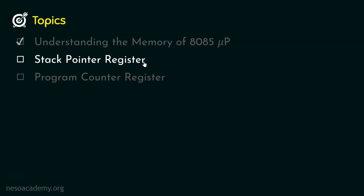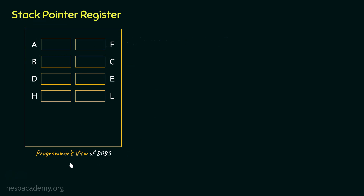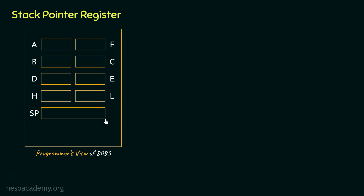Let's now learn about the stack pointer register. In the programmer's view of 8085, we have already covered the special purpose registers — the accumulator, the flag register — and the general purpose registers. The next special purpose register is the stack pointer register. It is used to store 16 bits of information. While all other registers are 8 bits, the stack pointer has a larger size of 16 bits, and in short it is termed SP. The reason it is 16 bits is that it contains memory addresses.